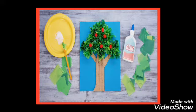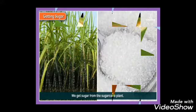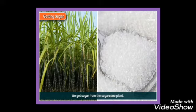Children, you must be enjoying craft work — sticking pictures in your project book. We use gum for sticking. We get gum from the juice of the gum tree. We also make sugar and jaggery from the juice of the sugarcane plant.